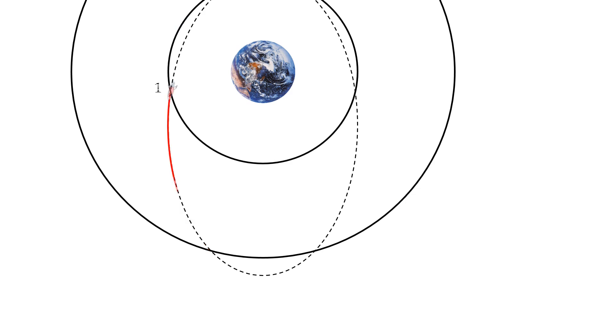At point 1, delta V1 is the difference between the initial circular orbit velocity, Vc sub 1, and the orbital velocity at point 1 of the transfer ellipse, Ve sub 1.